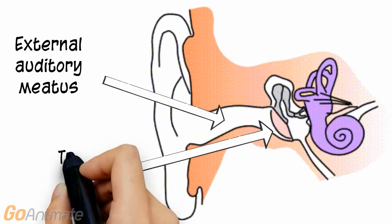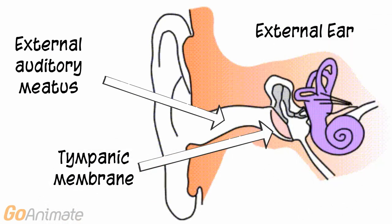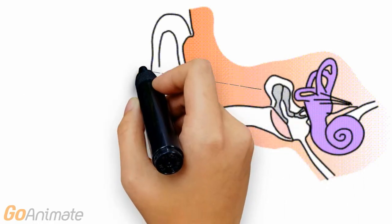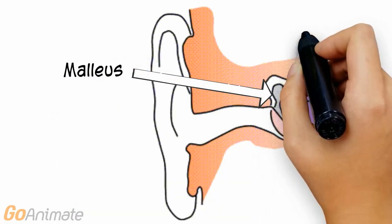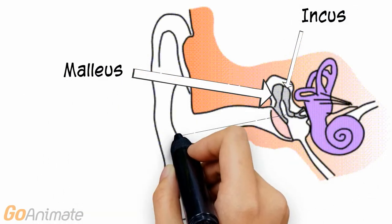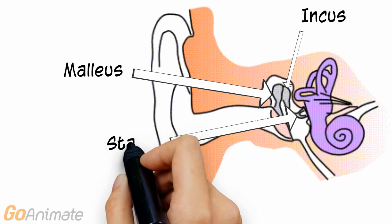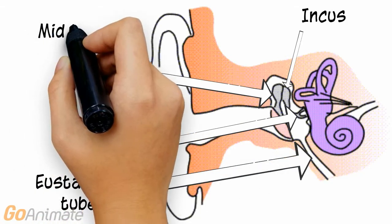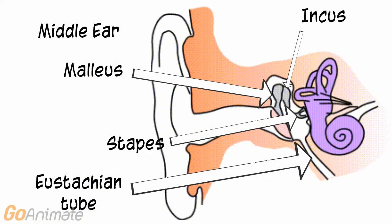The tympanic membrane is considered the boundary between the external and middle ear. The middle ear consists of the auditory ossicles, which include the malleus, incus, and stapes, and the eustachian tube that helps to equalize pressure inside of the ear.